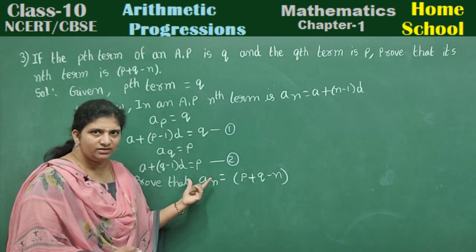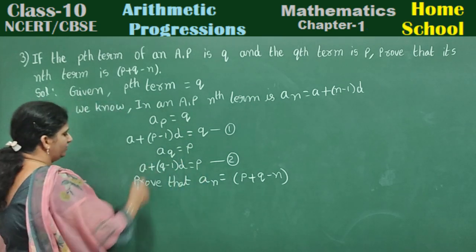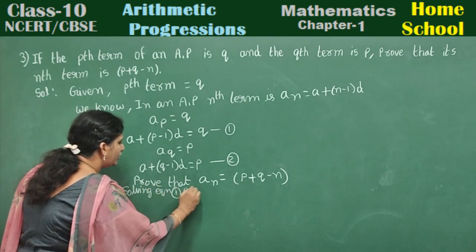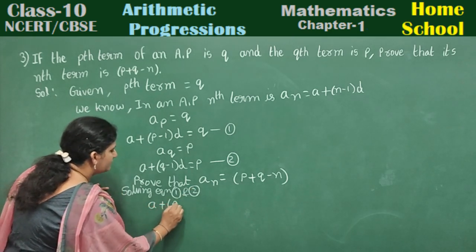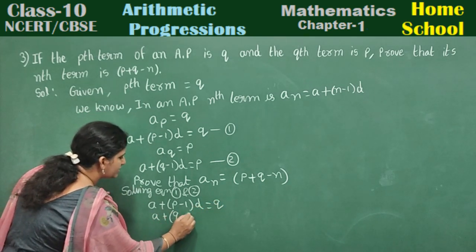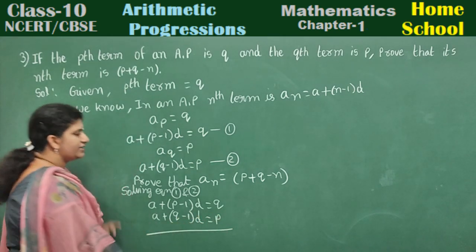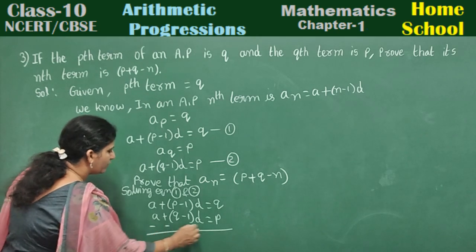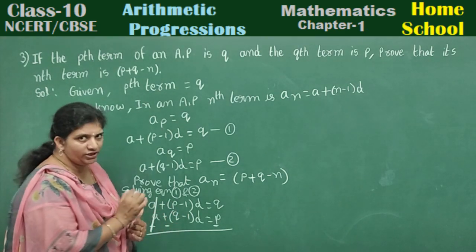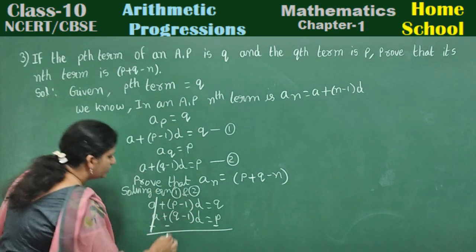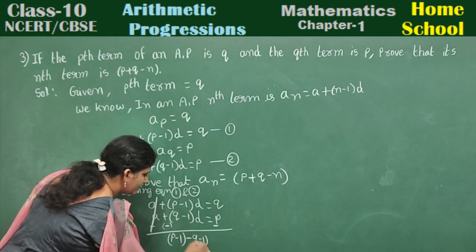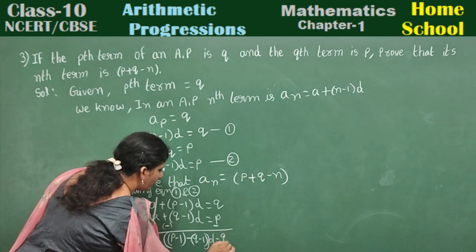Let us solve these two equations using the elimination method. Solving equations 1 and 2: a plus p minus 1 into d equals q, and a plus q minus 1 into d equals p. Subtract these two equations. A and minus a will be cancelled. Take d common: p minus 1 minus q minus 1 into d is equal to q minus p.